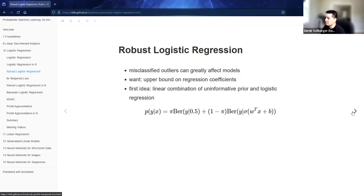So as mentioned last time, part of the idea is kind of a penalization. We want an upper bound on regression coefficients. So the first idea that's just kind of mentioned by a textbook author really quickly is to make a linear combination of an uninformative prior. That's this first term here and the logistic regression. That's this term here. So we have a linear combination. Presumably the pi values go between 0 and 1. This part, Bernoulli distribution was a 0.50 population prior is akin to a simple coin flip.